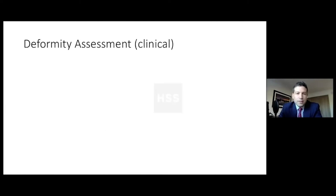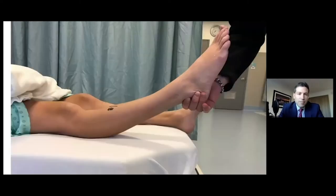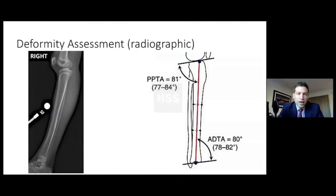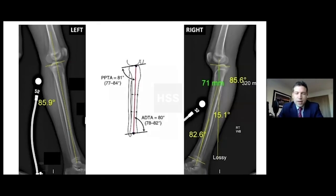Sagittal plane — deformity assessment is also clinical. Here's the patient's normal side; she has about zero plus five extension. The abnormal side, she has a hyperextension deformity, which is consistent with her radiographic deformity. This is her abnormal side on a lateral x-ray, a calibrated x-ray with the whole tibia on one cassette. We're going to look at the sagittal joint orientation angles, the PPTA and ADTA, to help plan our deformity correction. I looked at her contralateral normal side, which is about 85 degrees, and here's basically the calculation of how to identify the apex of the deformity or the center of rotation of angulation — i.e., the CORA.